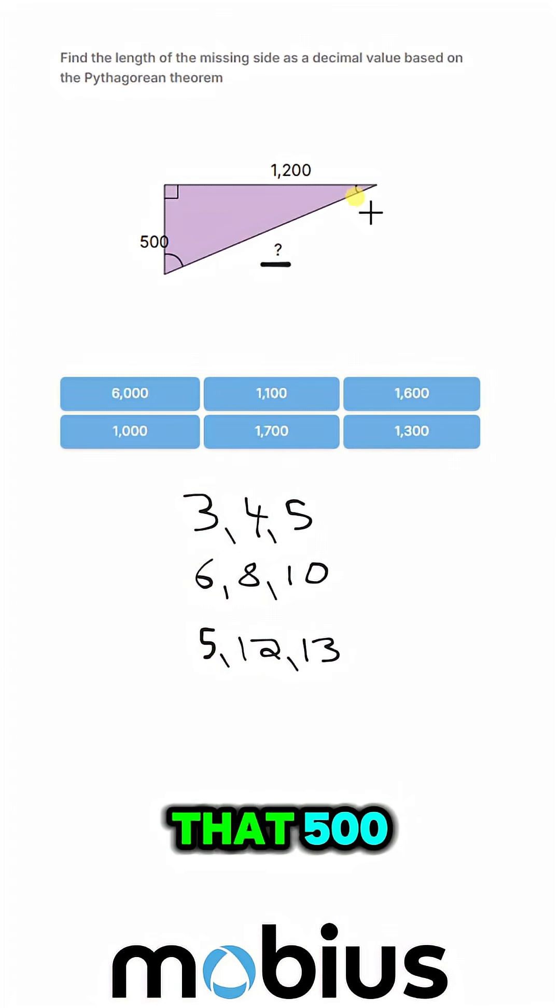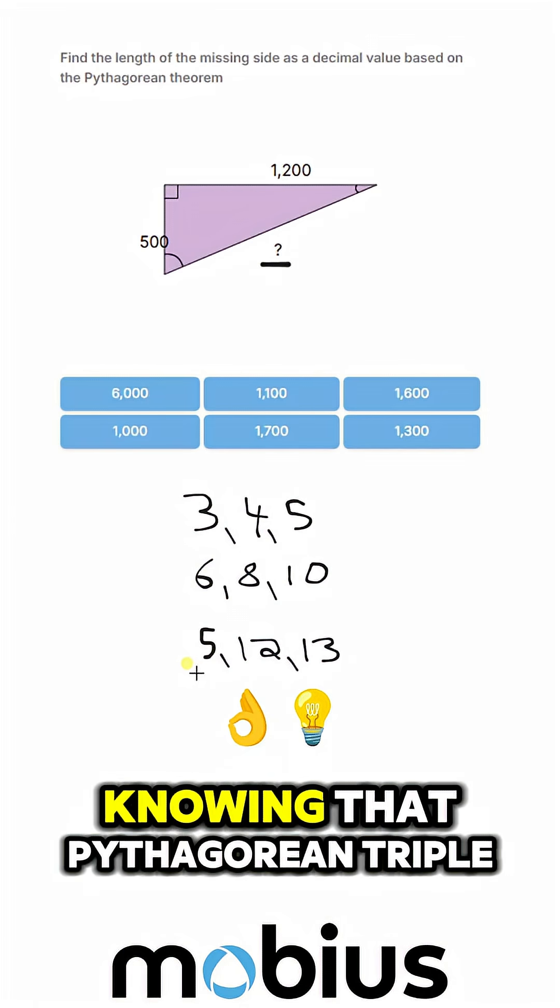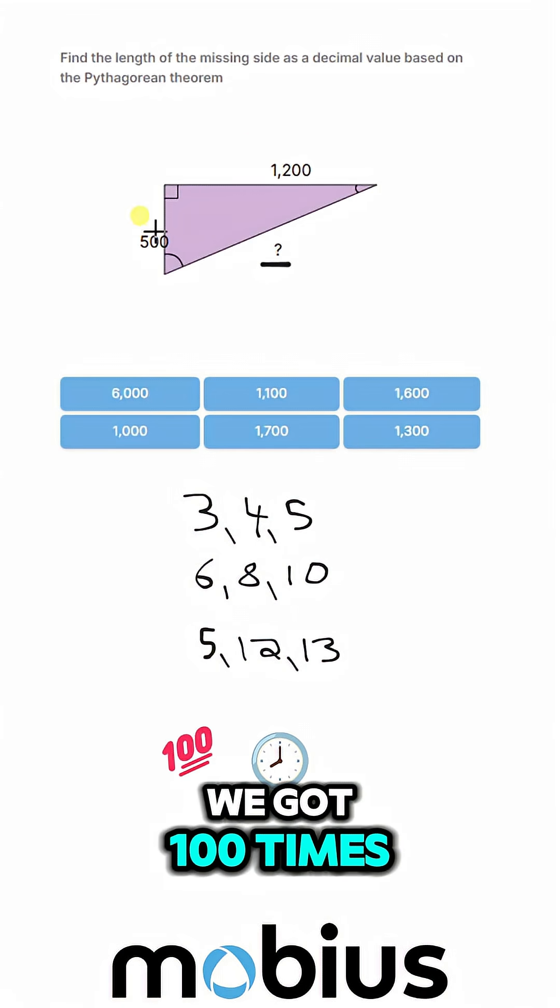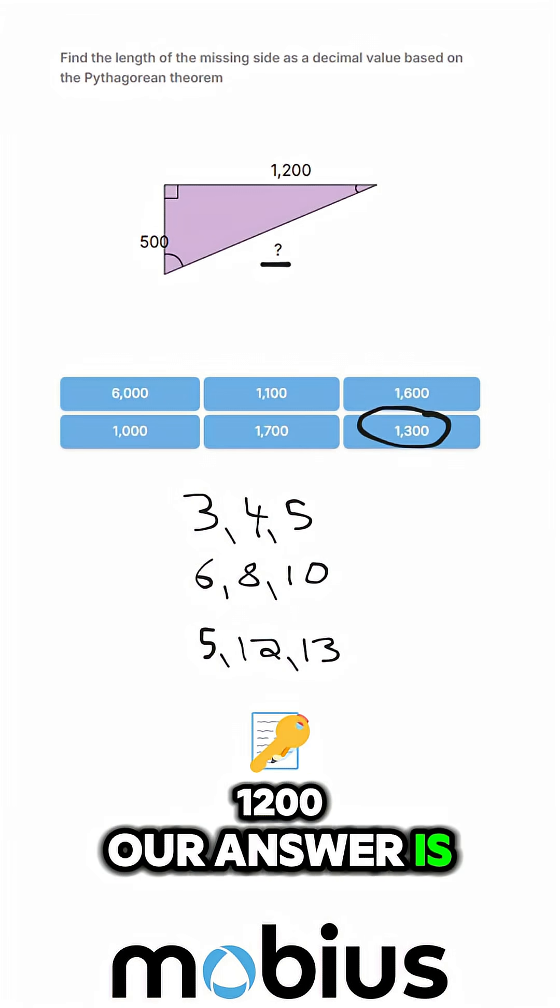You can see here we've got a multiple of that: 500, 1,200, and of course, 1,300. So knowing that Pythagorean triple, we've got 100 times our base multiple. 500, 1,200, our answer is right there.